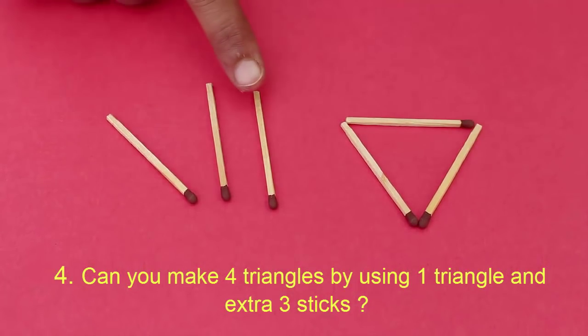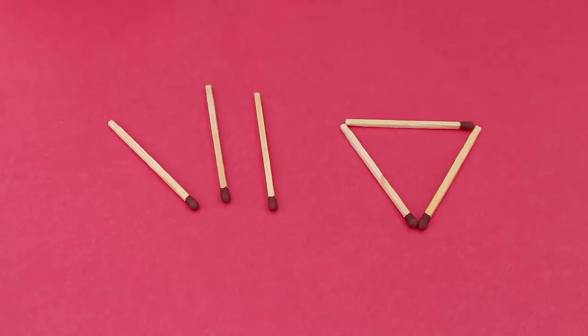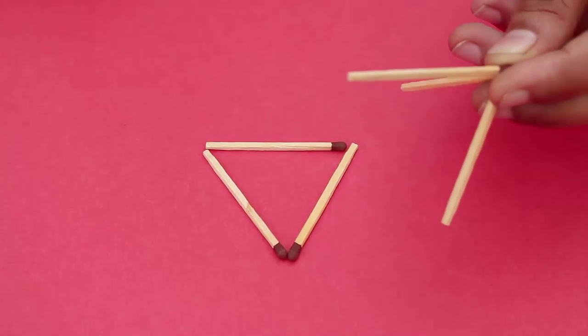Now for the fourth puzzle you have an equilateral triangle and three matchsticks. How do you make four triangles?